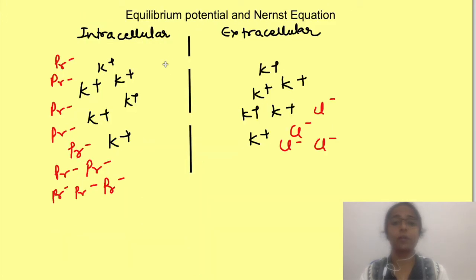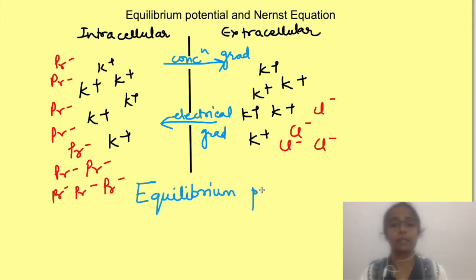Now here we are talking about single ion, i.e. potassium, whose movement is causing potential development. Now the potential at which ions concentration gradient is balanced by its electrical gradient so that no net movement of charges occurs is known as equilibrium potential for that ion. And this equilibrium potential can be determined by Nernst equation.